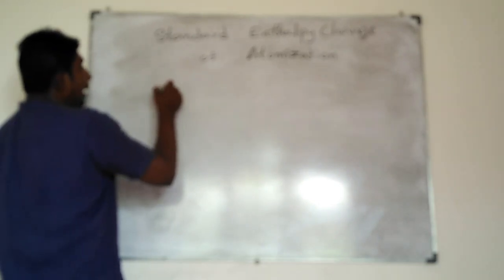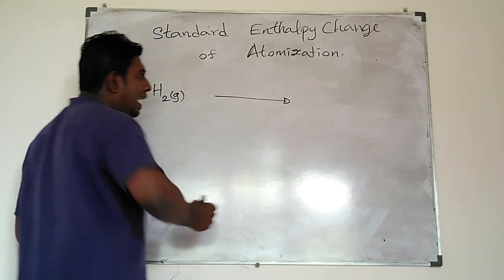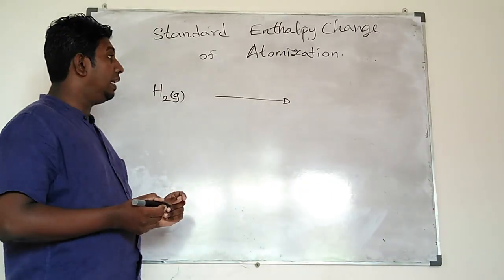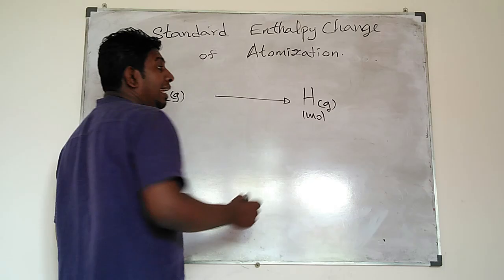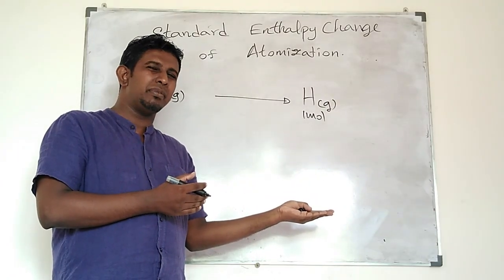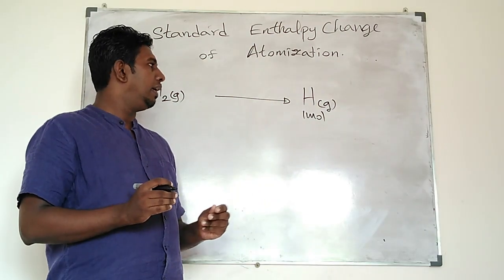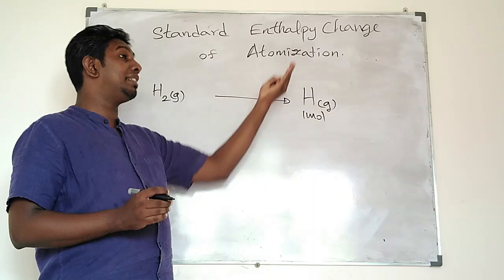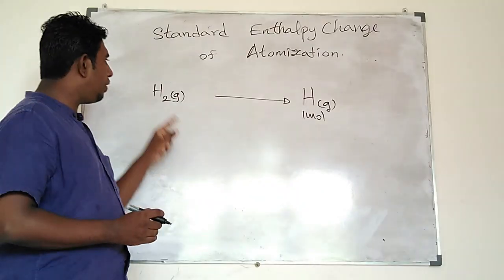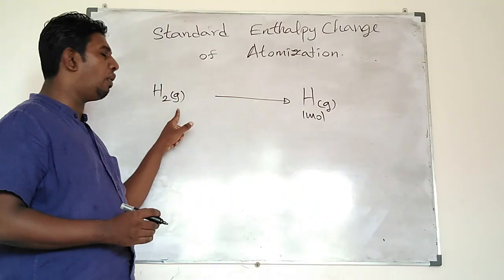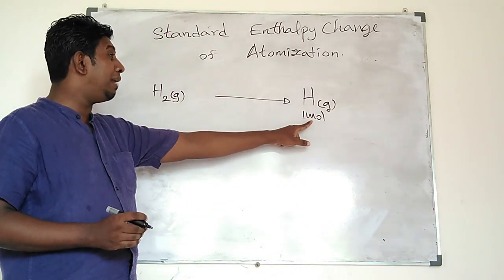Let's take a look at an example. Let's use H2 gas, hydrogen gas. According to the standard enthalpy change of atomization definition, we are going to form one mole of hydrogen gaseous atoms. When you talk about atoms separately, those would be at gaseous state. You need to maintain one mole on the product side, then balance accordingly the other side.